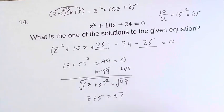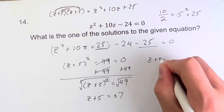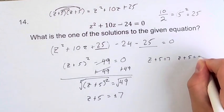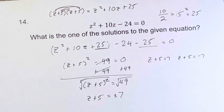Now we just have to solve this. We do z plus 5 is equal to 7, and z plus 5 is equal to negative 7. And this is going to give us our two solutions to the equation.